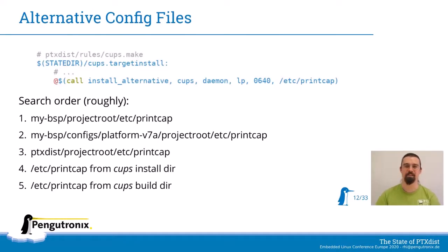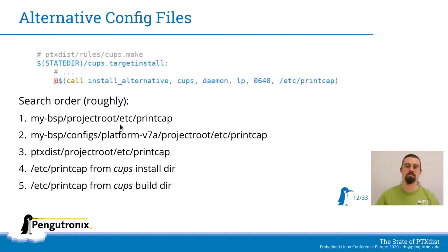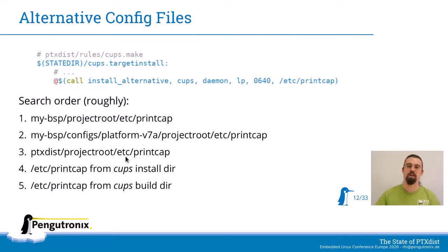Let's have a look at alternative config files first. Here we have a snippet from the upstream rule for CUPS from PTX-DISTS, and in the target install stage it uses this install_alternative macro to search for /etc/printcap. When PTX-DISTS sees this macro, it searches in different locations — first in my BSP project root, then in the config folder, then in the platform folder, then in PTX-DISTS itself, and if still not found, in the CUPS install dir and CUPS build dir. This way it uses the first /etc/printcap it has found. Usually PTX-DISTS includes a default version of these config files and you can override them in your BSP.